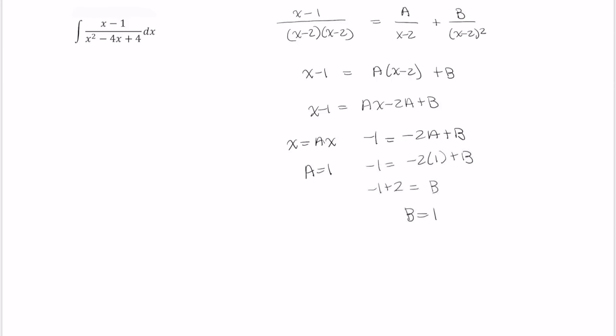So, A equals 1, B equals 1. This tells me that x minus 1 over x squared minus 4x plus 4 is equal to 1 over x minus 2 plus 1 over x minus 2 quantity squared.